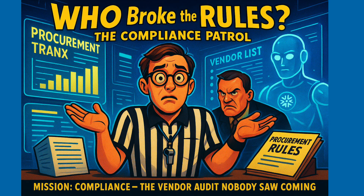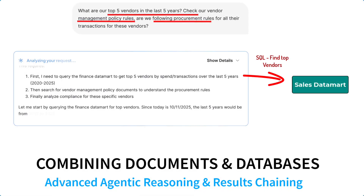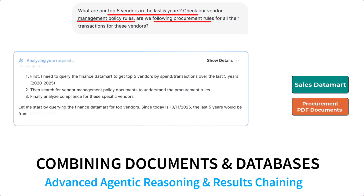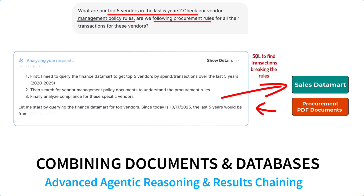Who broke the rules? The vendor audit nobody saw coming. First, AI has to query the top five vendors. Next, it has to find the right finance documents and then identify and extract the rules for procurement. Finally, it sends the rules back to the sales agent so it can query the at-risk transactions.